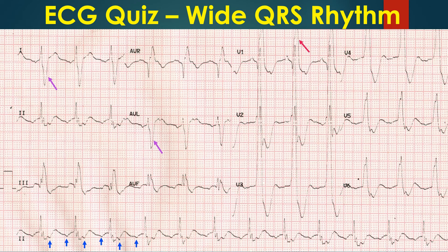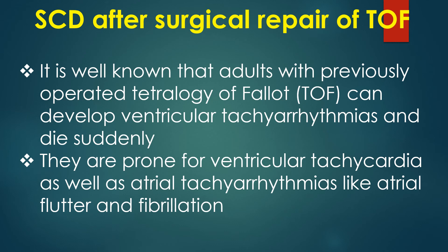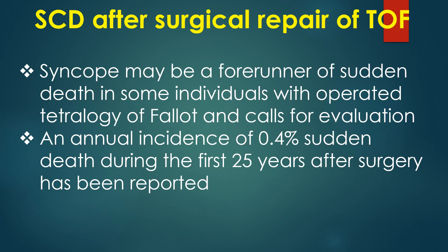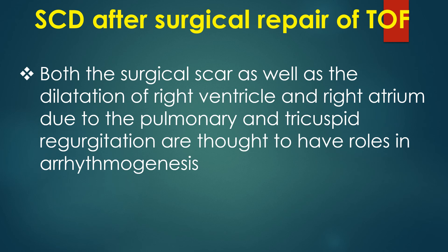All these indicate a high risk for ventricular arrhythmias. Such wide QRS is often noted in post-operative cases of tetralogy of Fallot. It is well known that adults with previously operated tetralogy of Fallot can develop ventricular tachycardia and die suddenly. They are prone for ventricular tachycardia as well as atrial tachycardia like atrial flutter and fibrillation. Both the surgical scar and the dilatation of the right ventricle and right atrium due to pulmonary and tricuspid regurgitation are thought to have roles in arrhythmogenesis.